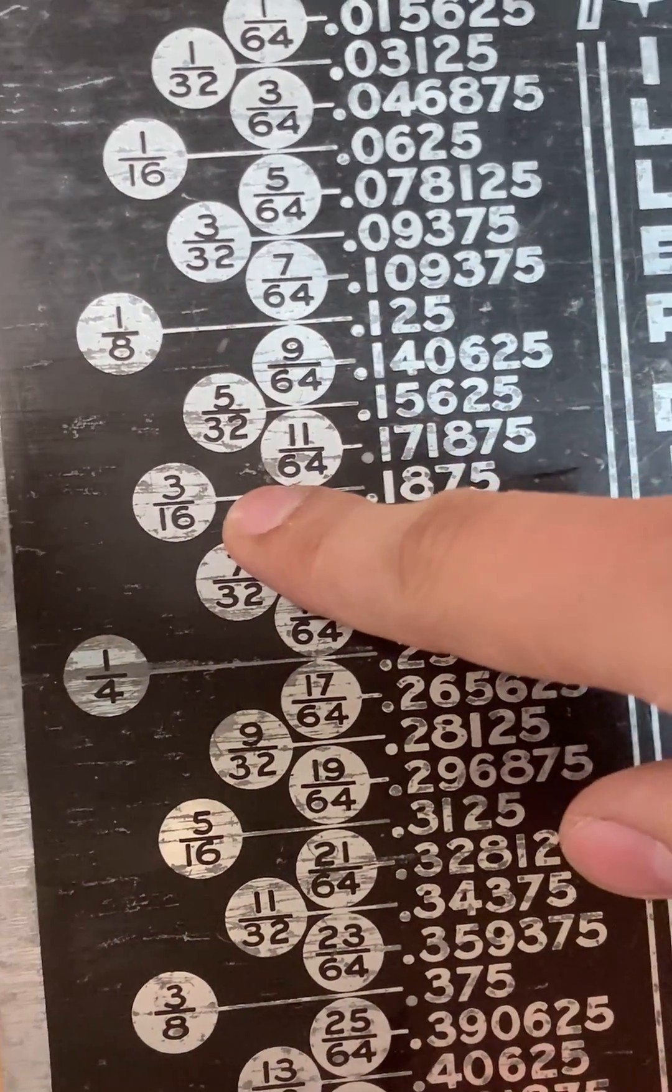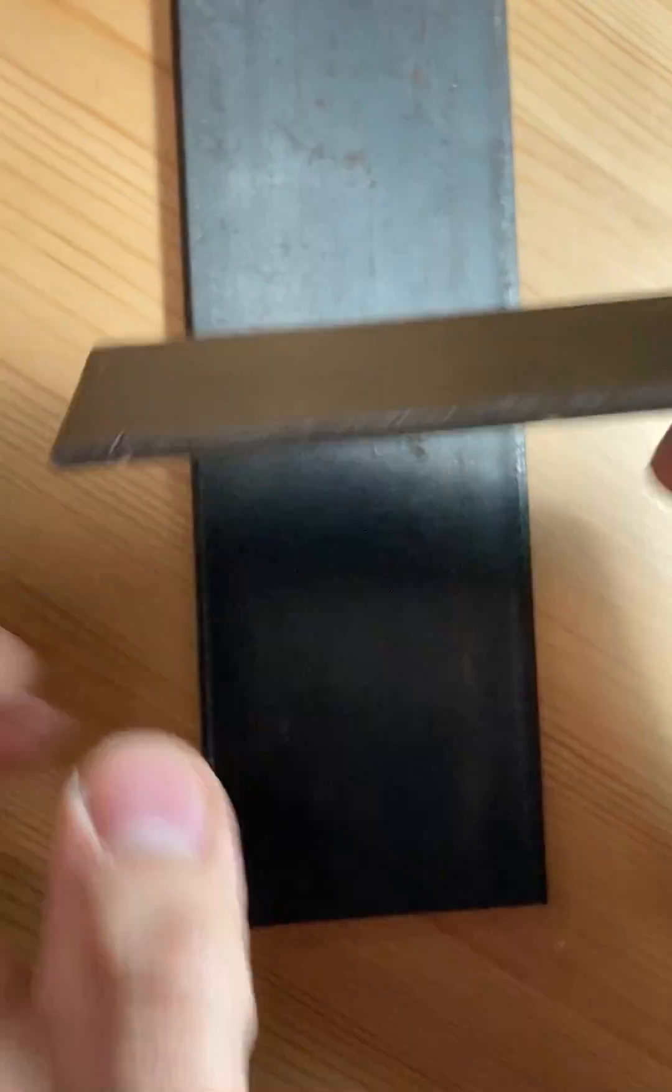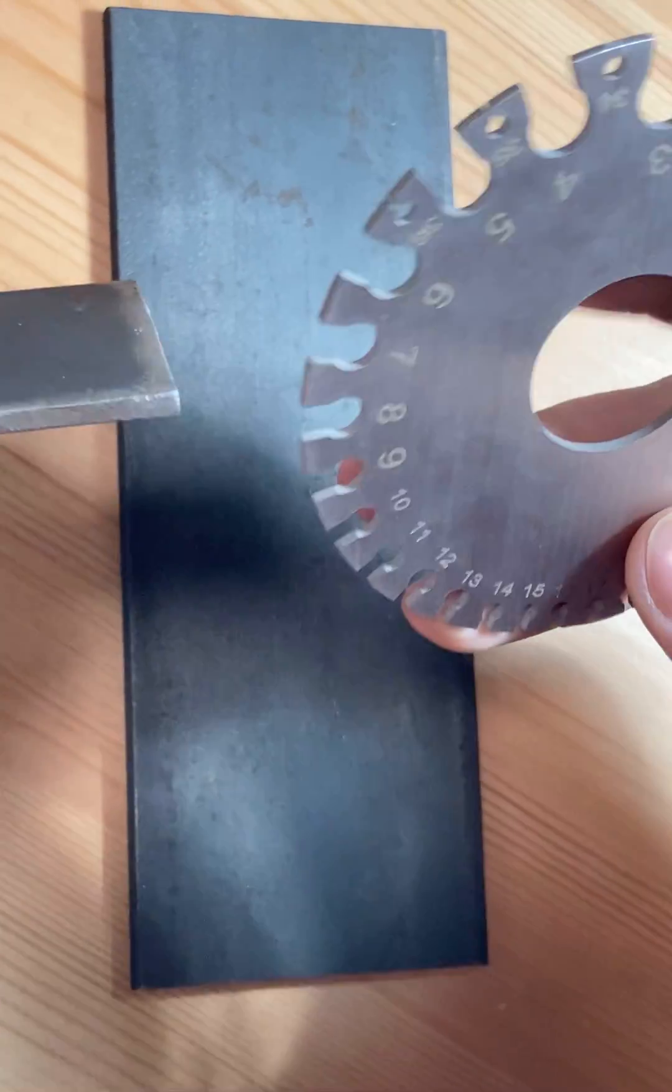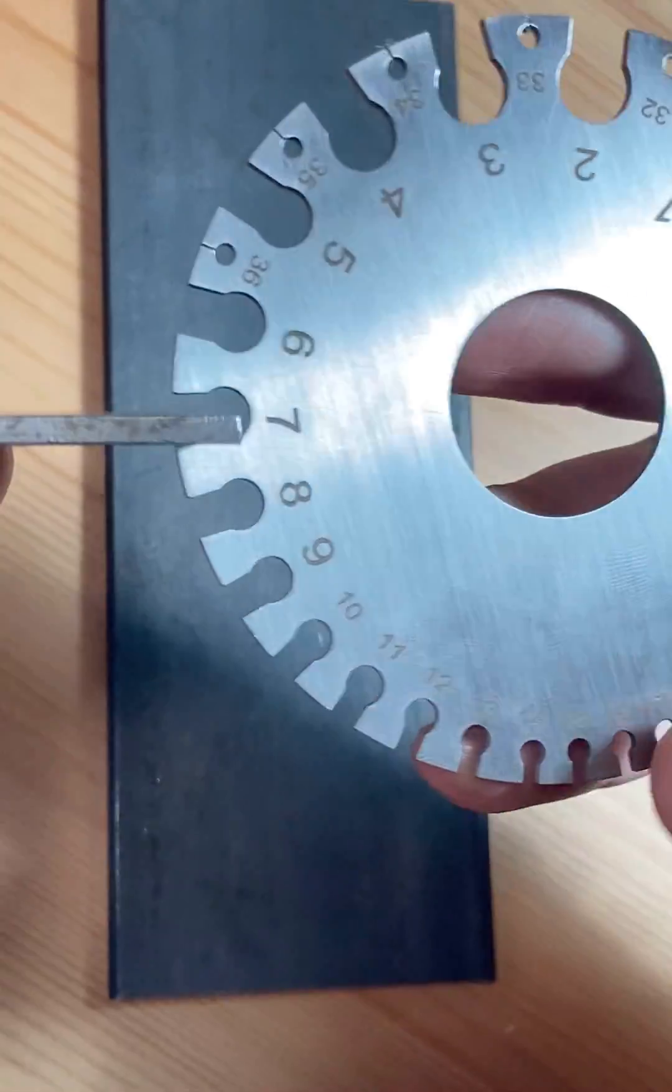Here we have another piece of metal with an unknown thickness. What you want to do is grab your AWG gauge again and start sliding it into the slots.